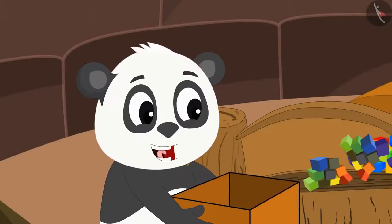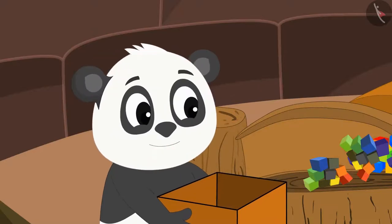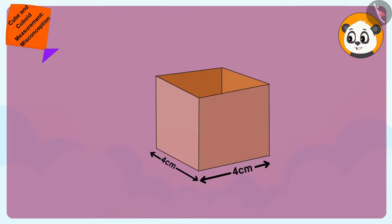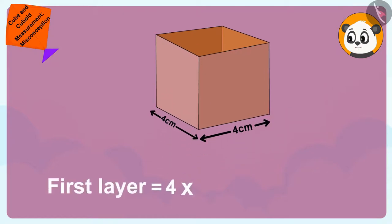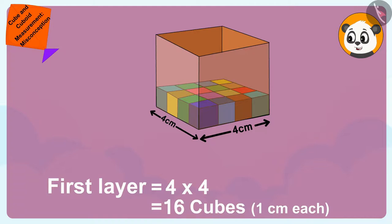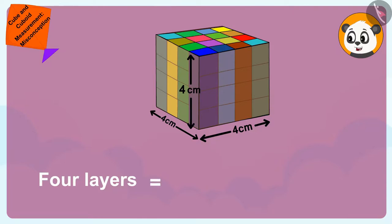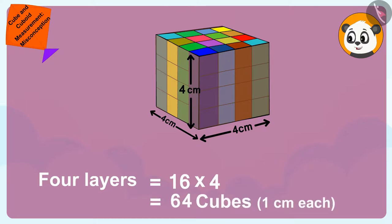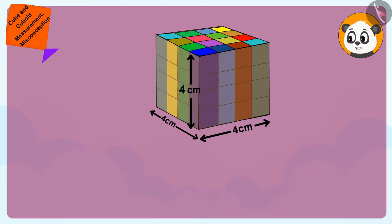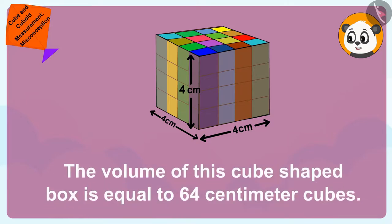I will find the volume of this cube shaped box. Shere Khan, the sides of the cube shaped box are 4 cm each. This means the first layer will have 4 times 4, 16 cubes of dimension 1 cm each, and its height is 4 cm. It means there will be 4 layers. We will be able to place 16 times 4, 64 cubes of dimension 1 cm each. In other words, the volume of this cube shaped box is equal to 64 cm cubed.